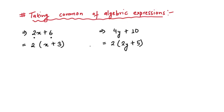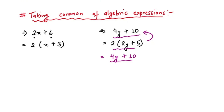You can always check whether your answer is correct by multiplying the result — it should give us our original question. So 2 times 2y is 4y, plus 2 times 5 is 10, which is our original expression 4y plus 10. You can always verify what you have done is correct.